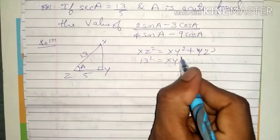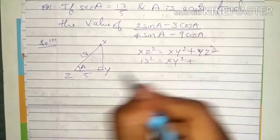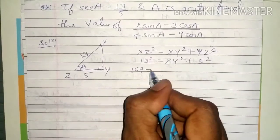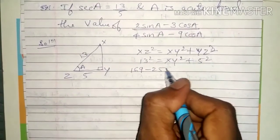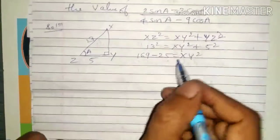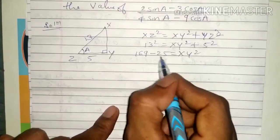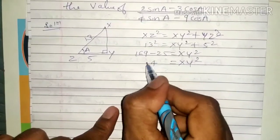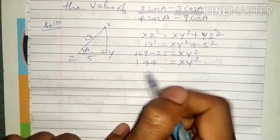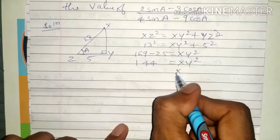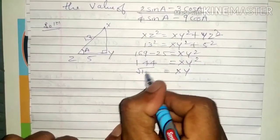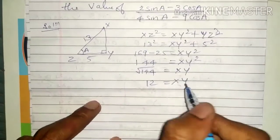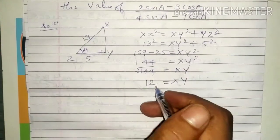So 13 squared equals XY squared plus 5 squared. That is 169 equals XY squared plus 25. Therefore XY squared equals 169 minus 25, which is 144. So XY equals root 144, which equals 12.